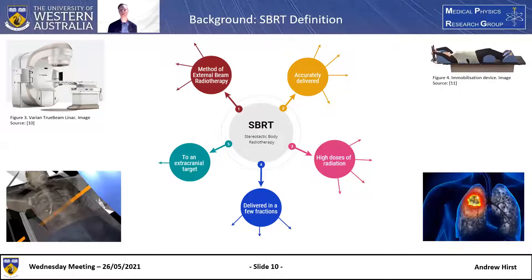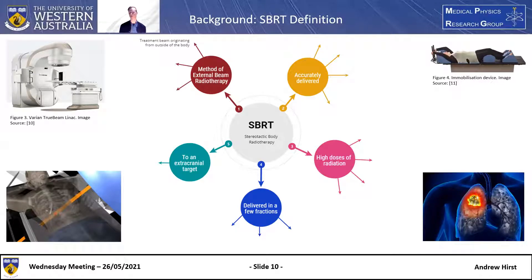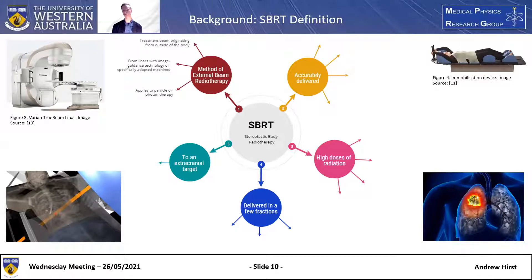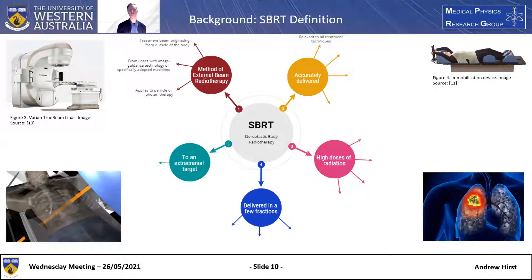First of all, it's a method of external beam radiotherapy. This means the treatment beam originates from outside of the body, compared to something like brachytherapy where the radiation source is inside the body. It's not machine or radiation type specific — it can be done on LINACs with image guidance technology, or on specifically adapted machines like a CyberKnife, as well as with particles or with photons. In this project, we'll be using LINACs, and therefore we'll be using photons. The second part of the definition: it must be accurately delivered. This is especially relevant in SBRT because of the high doses per fraction, and it must be accurately delivered across all areas of the treatment process: disease staging, target and organs-at-risk delineation, and intrafraction motion management.